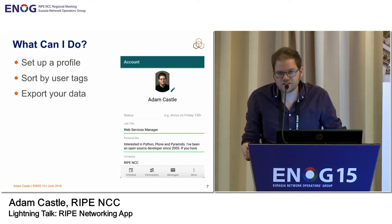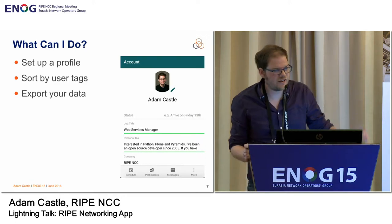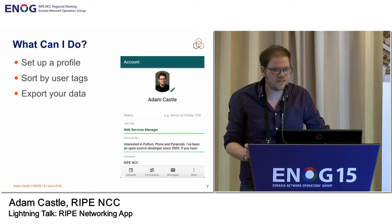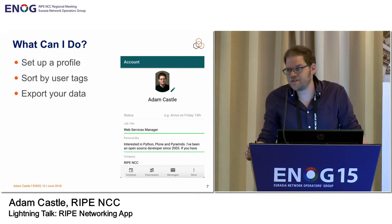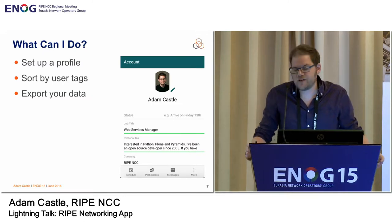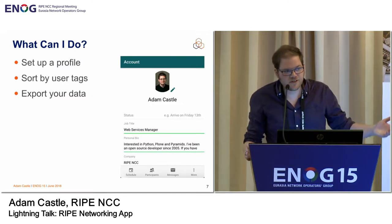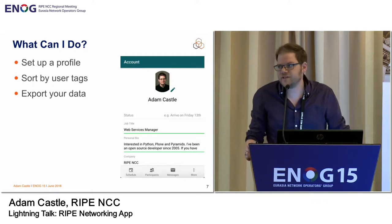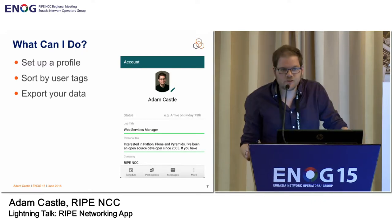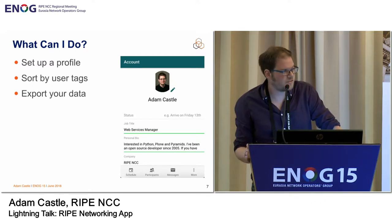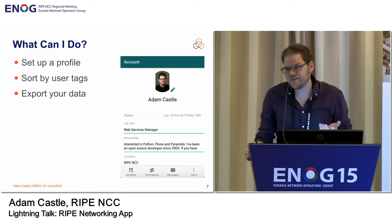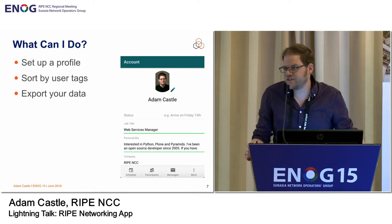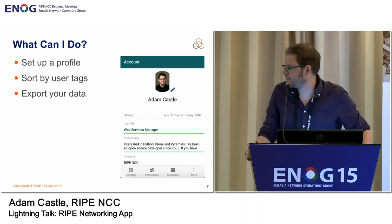Another thing you can do is set up your own profile. You only ever have to do it once, unless you want to change it. It takes your picture from your RIPE NCC access account. You can put in your job title or company name. You can also add tags — for example, I put in that I like Python and open source, so you can filter for this in the attendee list.